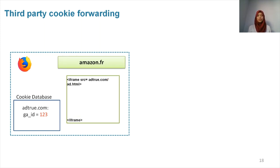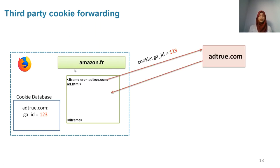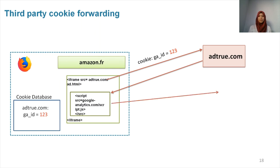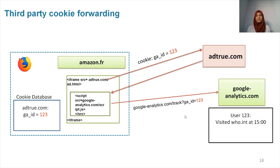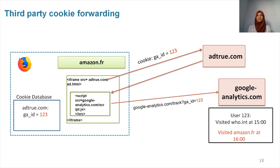Later on, let's say the user goes to a different website, amazon.fr, that has the same content from addtrue.com with the embedded analytics script. So once again, the request will be sent to Google Analytics with the third-party cookie, and this time Google Analytics will get to know that user 123, who was visiting the World Health Organization before, is now visiting amazon.fr. And so, Google Analytics is no longer behaving as an analytics service — instead, it is cross-site tracking the user, since it is able to link the user's activity across different websites.